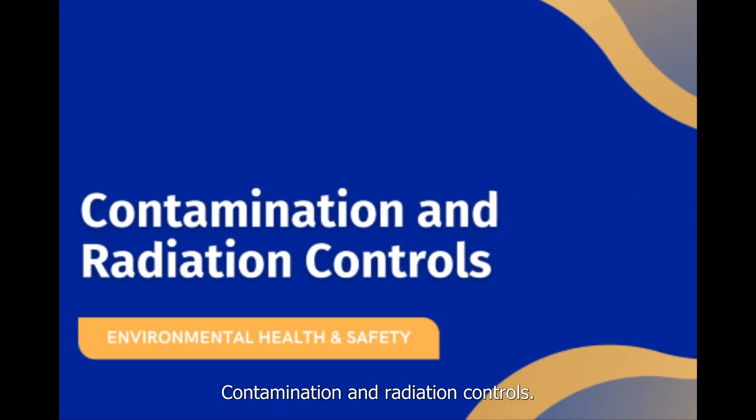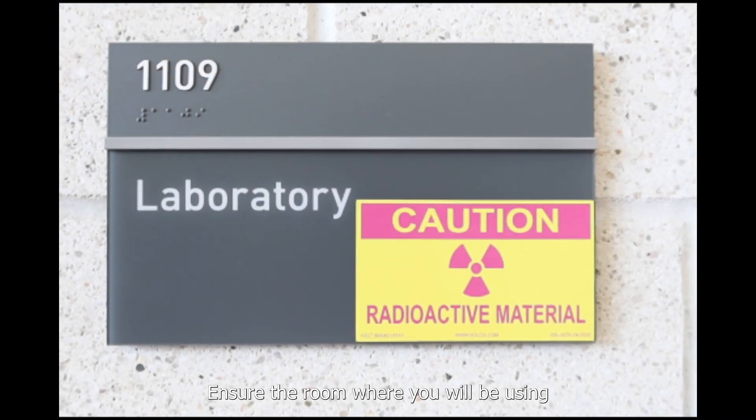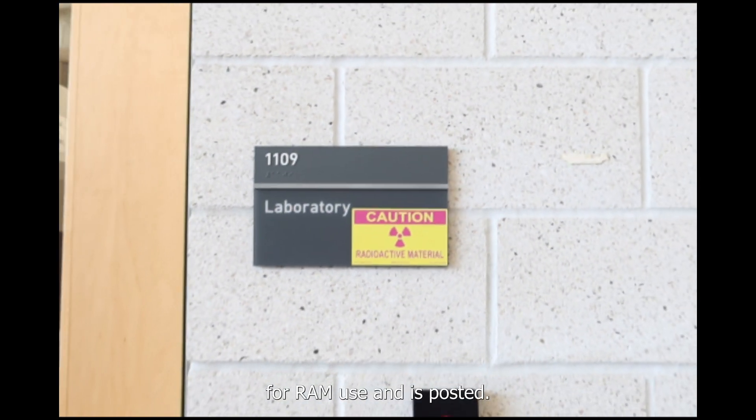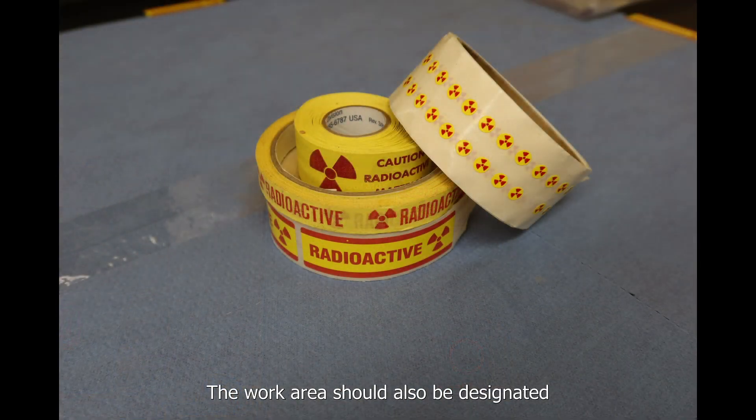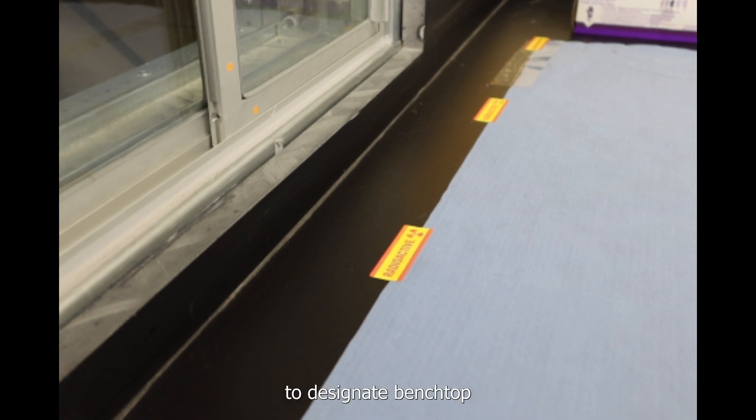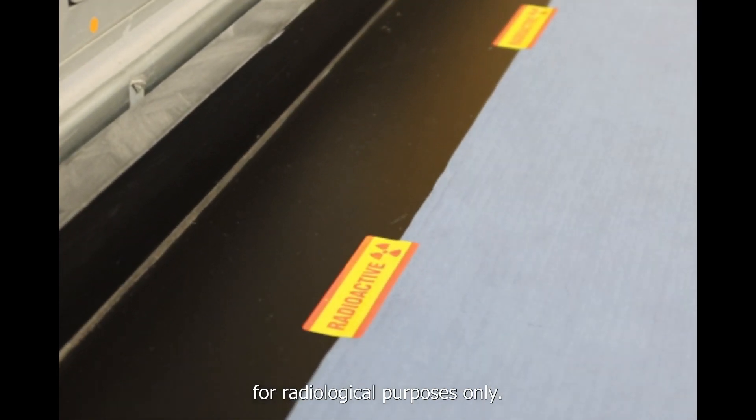Contamination and Radiation Controls. Ensure the room where you will be using radioactive material is designated for RAM use and is posted. The work area should also be designated for RAM use by using radiological tape to designate benchtop areas and equipment used for radiological purposes only.